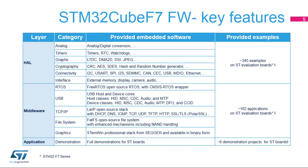The middleware layer contains a full USB host and device stack supporting many classes, as shown. StemWin, a professional graphical stack solution, is available in binary format and based on the emWin solution from ST's partner SEGGER, as well as LibJPEG, an open-source implementation on STM32 for JPEG image encoding and decoding. There is also a CMSIS-RTOS implementation with FreeRTOS, an open-source solution, and a FAT file system based on an open-source FATFS solution. The TCPIP stack is based on the open-source LWIP solution, and the SSL/TLS secure layer is based on open-source PolarSSL.